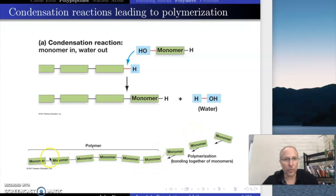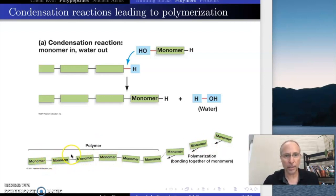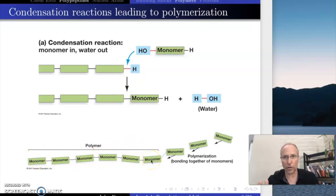Think about this: here we have a polymer that's six monomers long. How many water molecules did we produce to make this polymer of six monomers? Every single bond that connects a monomer is going to produce water just like this. So that means water came out here — one, two, three, four, five. We have six of these together and we produce five waters.